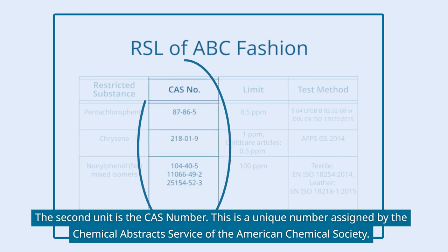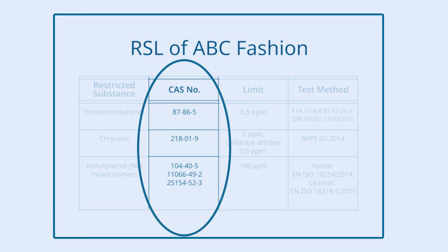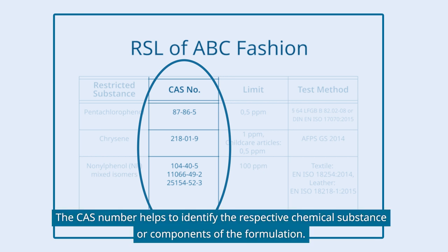The second item is the CAS number — a unique number assigned by the Chemicals Abstract Service of the American Chemical Society. The CAS number helps to identify the respective chemical substance or components of the formulation.